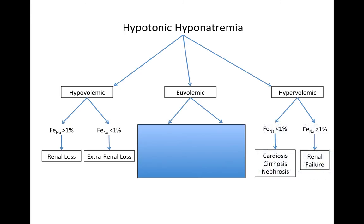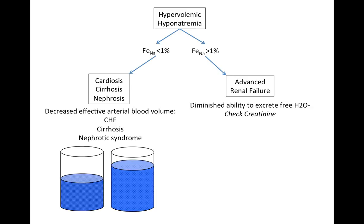In hypervolemic hyponatremia, the three classic causes are cardiosis (CHF), cirrhosis (liver failure), and nephrosis (nephrotic syndrome). In all three, there is a decrease in effective circulating blood volume, causing the kidneys to retain sodium and volume, resulting in a low FENa. In advanced renal failure, the kidneys lose the ability to excrete fluid or retain sodium, causing an elevated FENa with a hypervolemic state and typically very high creatinine.